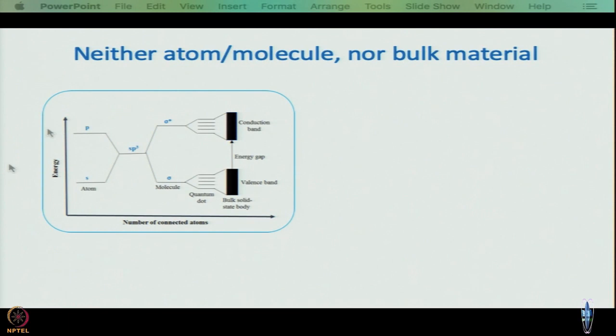As we have studied in class 11 and 12, in atoms we talk about orbitals and discrete energy levels. In the first approximation, we use them as linear combinations — either in hybridized or unhybridized state — to generate molecular orbitals when we want to talk about molecules. Once again, in molecules we have discrete energy levels.